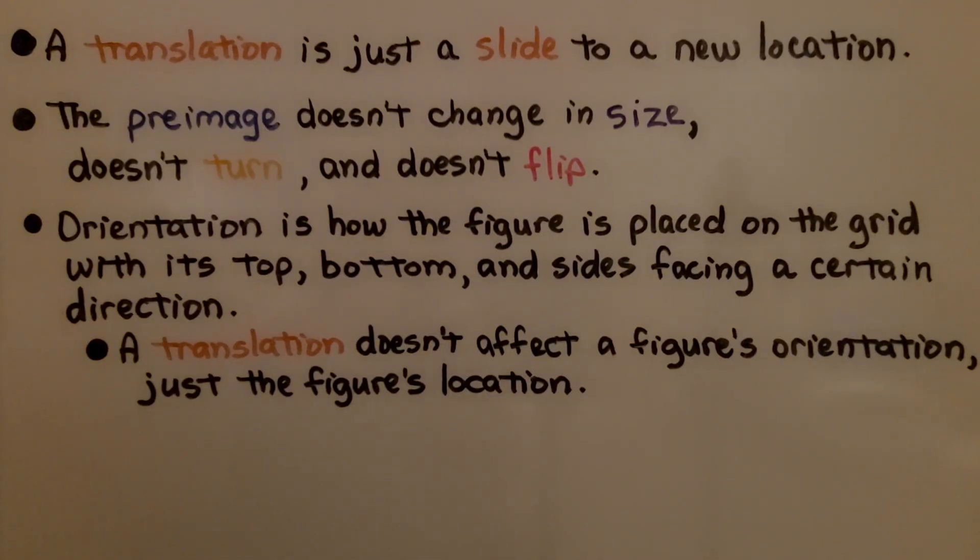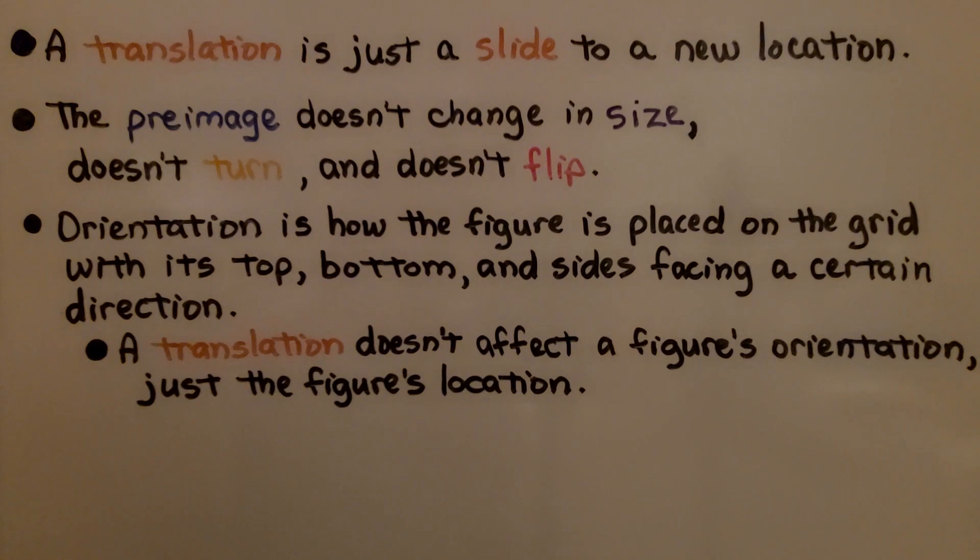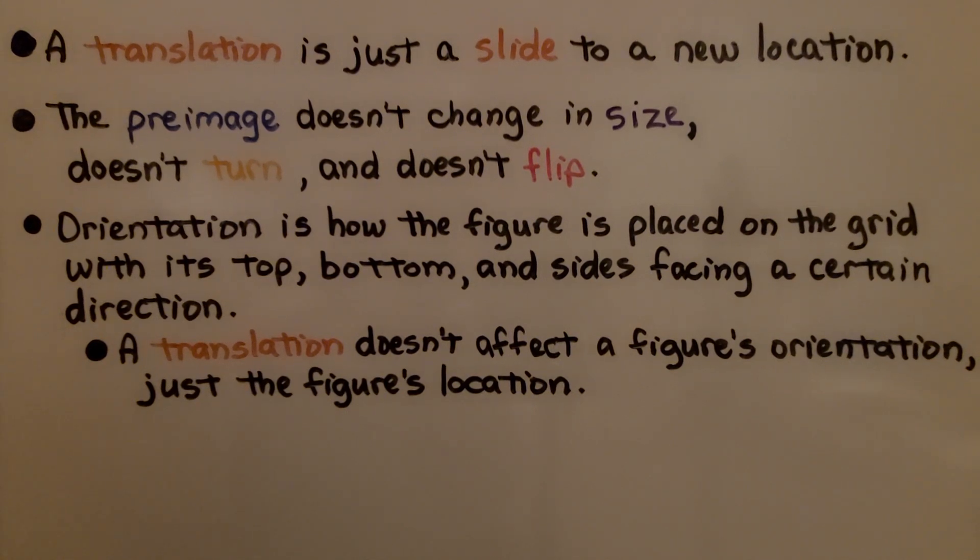A translation is just a slide to a new location. The pre-image doesn't change in size, doesn't turn, doesn't flip. Orientation is how the figure is placed on the grid with its top, bottom, and sides facing a certain direction. A translation doesn't affect a figure's orientation, just the figure's location.